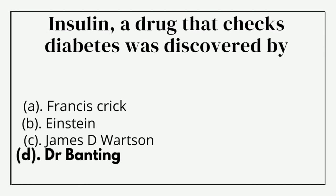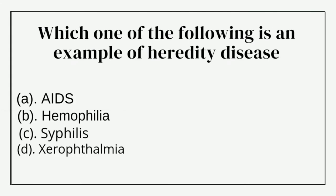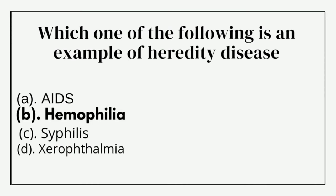Which one of the following is NOT an example of a hereditary disease? Option A: AIDS, option B: hemophilia, option C: sickle cell, option D: xerophthalmia. The correct answer is option A: AIDS.